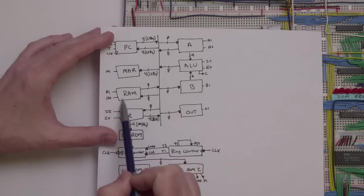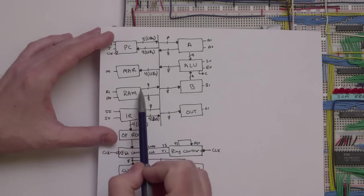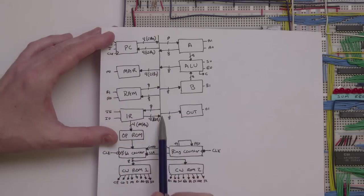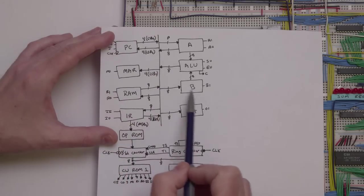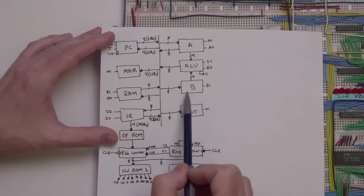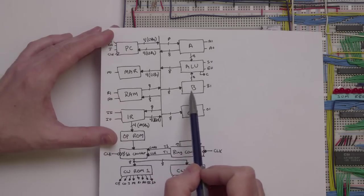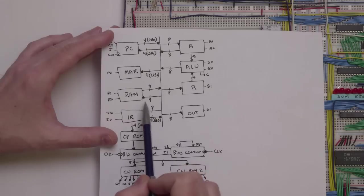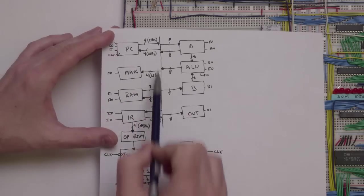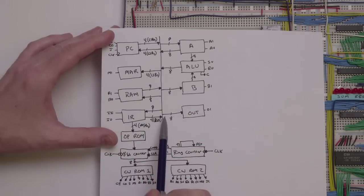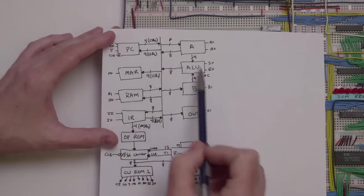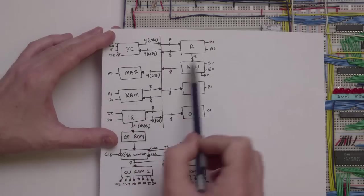Likewise, if you want to take information from RAM and put it into the B register, you could do that. At some point in time, that information goes from RAM onto the bus, and then the B register reads whatever is on the bus. So at any point in time, you can have basically one thing putting information on the bus, and then one or more things reading information from the bus. That's how you move information from one part of the computer to the other.